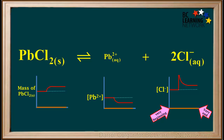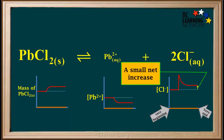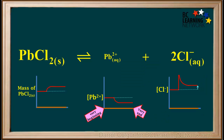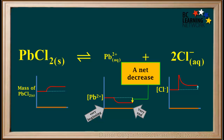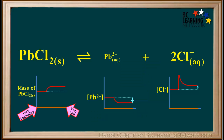Looking at the graph for the chloride ion concentration, we see that from the very beginning of the process to the very end, there was a small net increase in the concentration of Cl⁻. Moving over to the graph of Pb²⁺ concentration, we see that from the very beginning to the very end, there was a net decrease in the concentration of Pb²⁺. And moving over to the graph for the mass of solid PbCl₂, from the very beginning to the very end, there was a net increase in the mass of this solid precipitate.